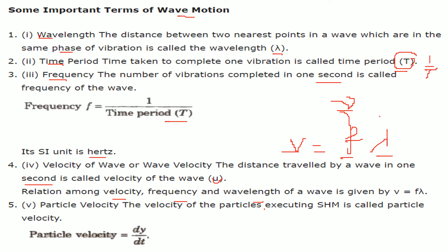Particle velocity is the velocity of the particle which is actually moving — vibrating at the same position, performing simple harmonic motion. This is called the particle velocity and is given by dy/dt.